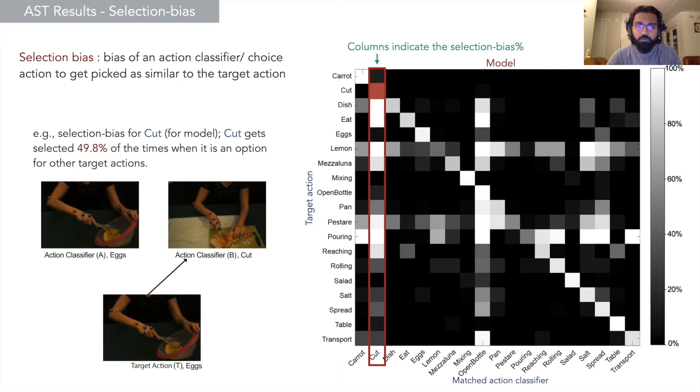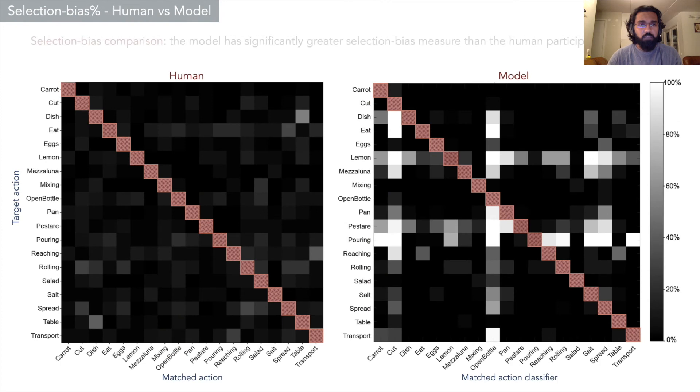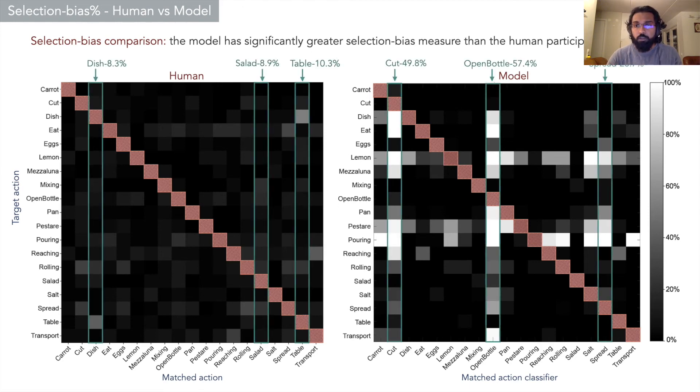If we look at comparison between both of them, the model has significantly greater selection bias measure than the human participants, but it's rising mainly due to few of the action classifiers.